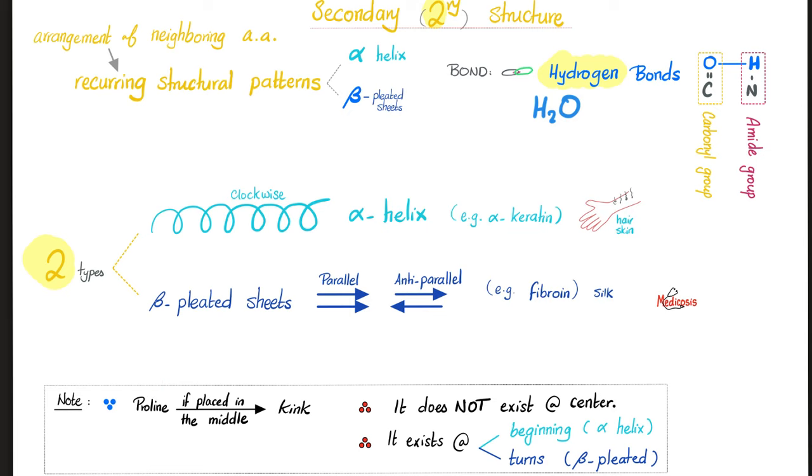Note, proline is weird. If you put proline in the middle of the alpha helix or in the middle of the beta sheet, it will make a kink and will destroy the whole thing. Therefore, proline will not exist in the center. Proline will exist at the beginning or at the start of the alpha helix or at the turn of the beta pleated sheet, but not in the middle.